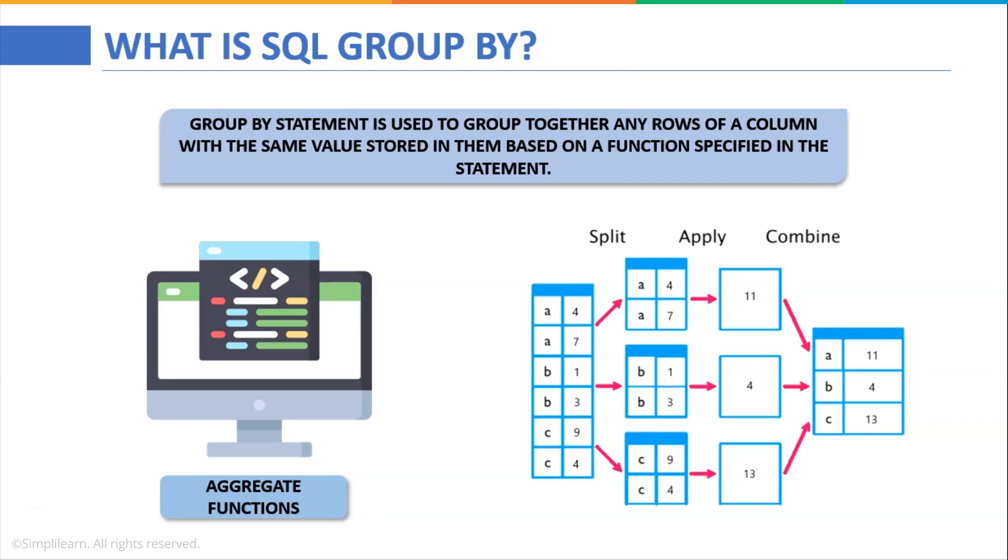and B, 1, 3 it becomes 4 and C, 9, 4 it becomes 13. So it will display all these identical rows having matching values into a resultant set. So in this way, you can use the SQL GROUP BY.